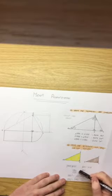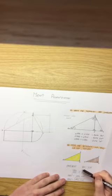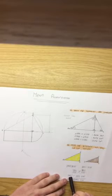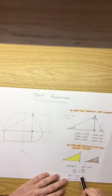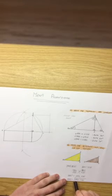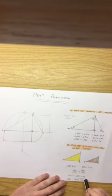So AD over BD is equal to BD over CD. We then cross multiply. BD squared is equal to AD multiplied by CD. BD is equal to the square root of AD multiplied by CD.